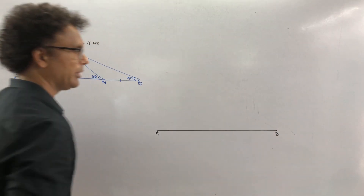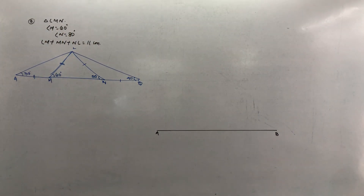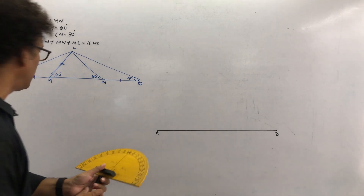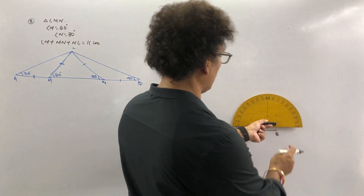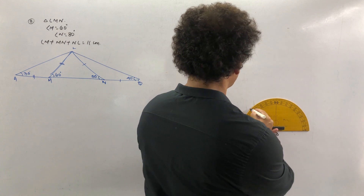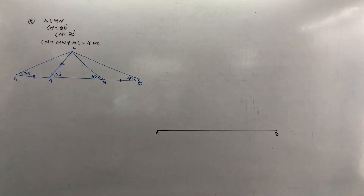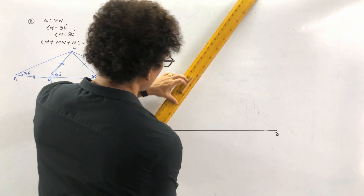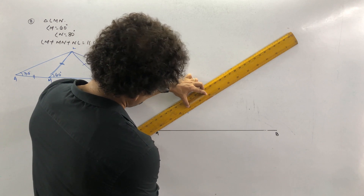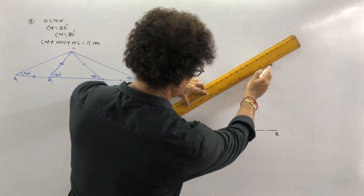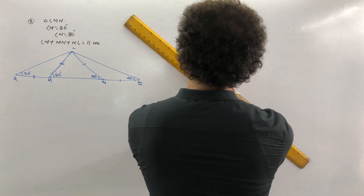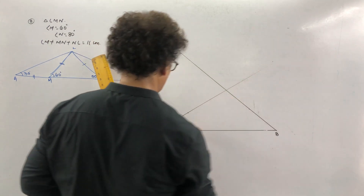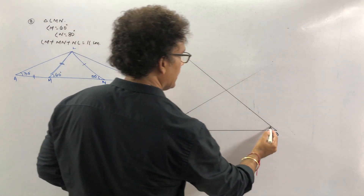Now check the base angles: on the left side, 60° so draw 30°, and on the right side, 80° so draw 40°. From the left end hold the protractor and draw 30°, and from the right end draw 40°. Draw straight lines at those angles to get the apex point L.